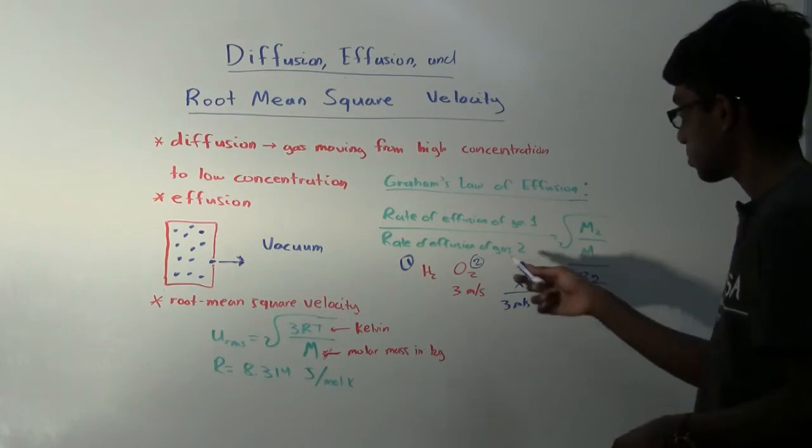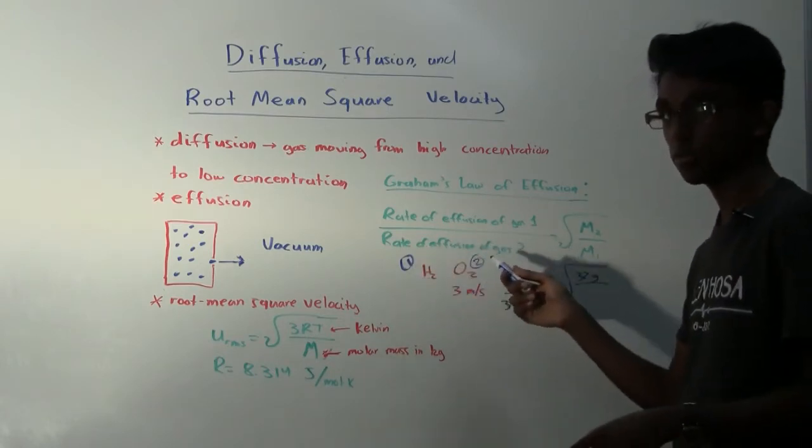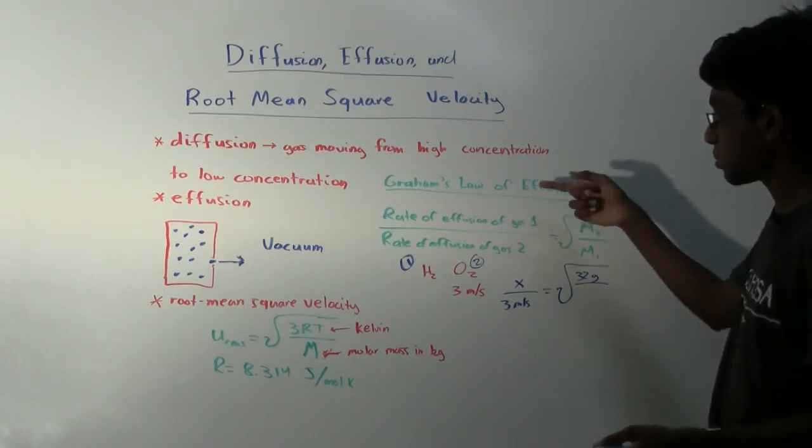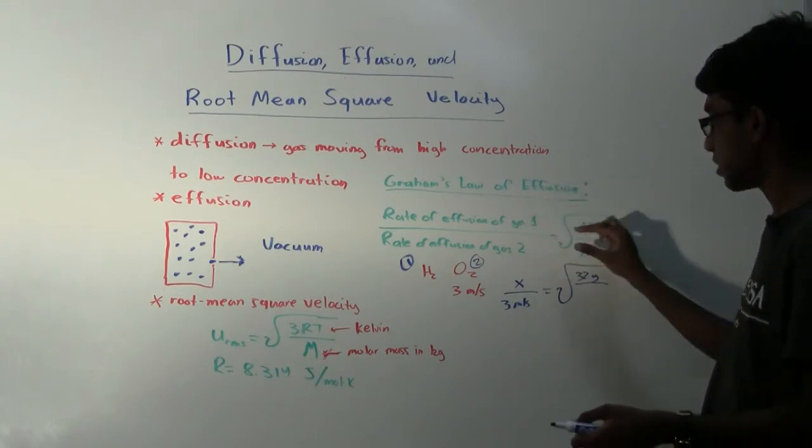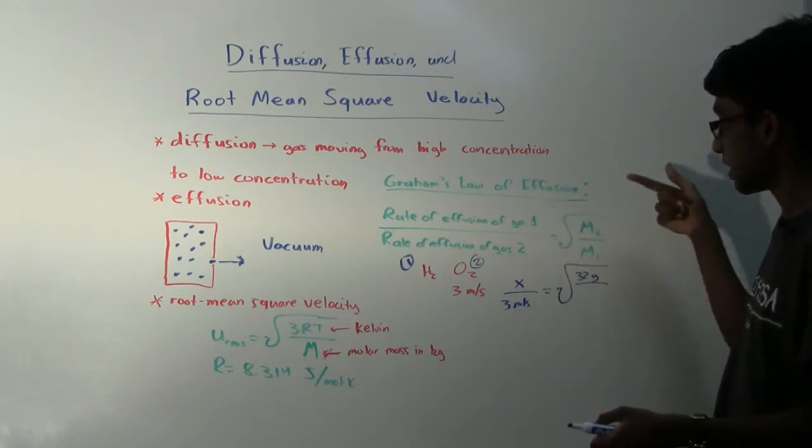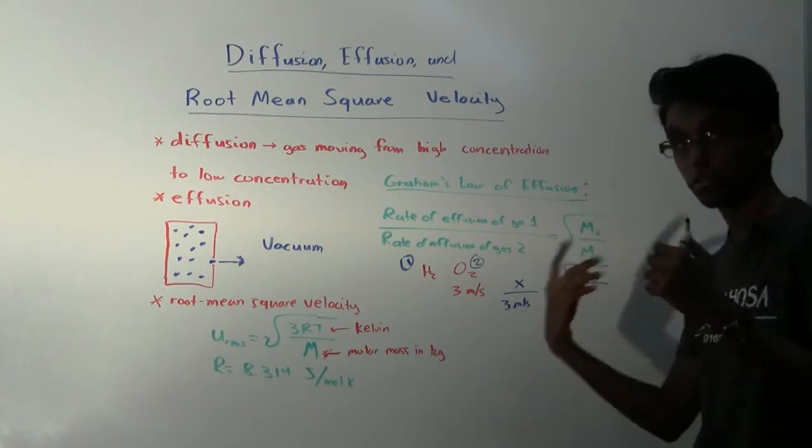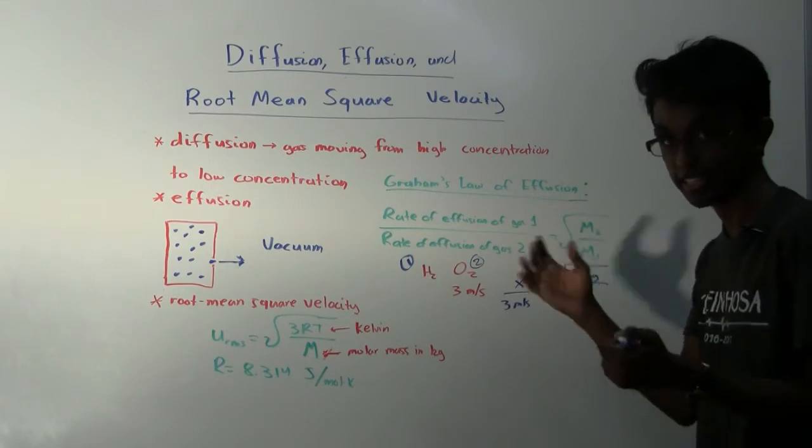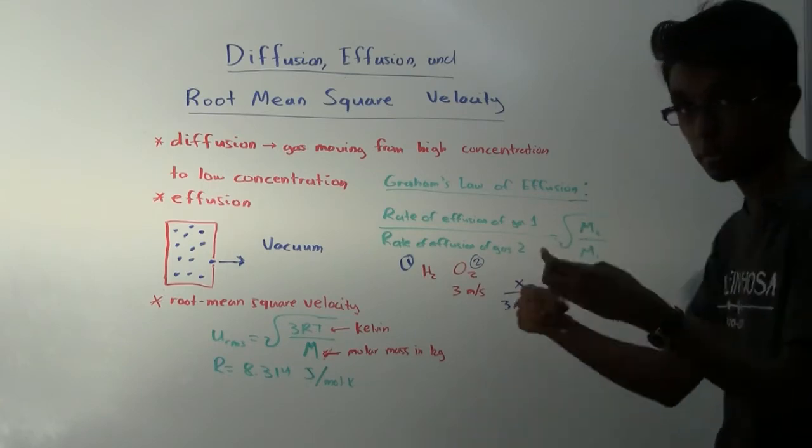And that's why I'm saying that we should probably label one gas as gas 1 and one gas as gas 2, because these are actually flipped. Even though it says rate of effusion of gas 1 over gas 2, here it's equal to the square root of gas 2 over gas 1. We don't want to confuse our numbers, so that's why we should label one gas as gas 1, one gas as gas 2, so we don't mix up our numbers.